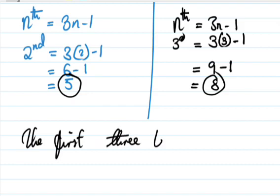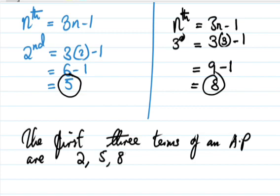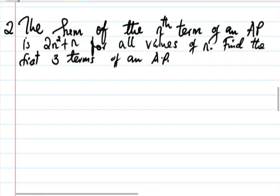So the first three terms are 2, 5, and 8. Next question: the sum of the nth term of an AP is given by 2n² + n for all values of n. Find the first three terms of the AP.